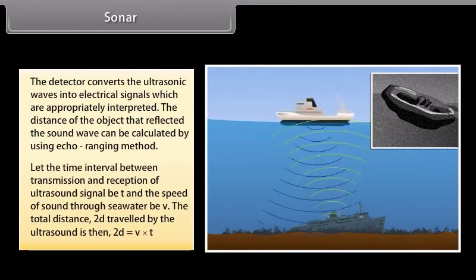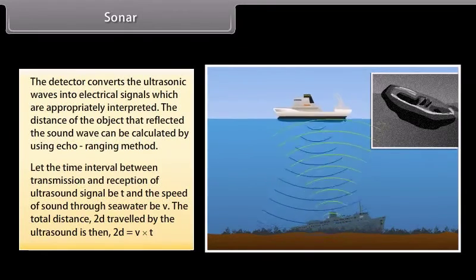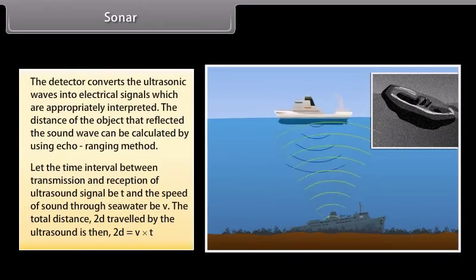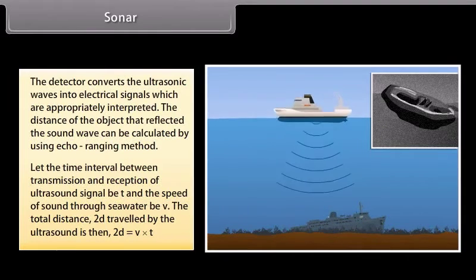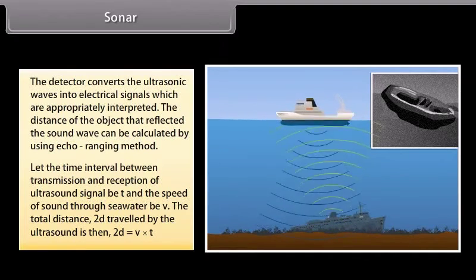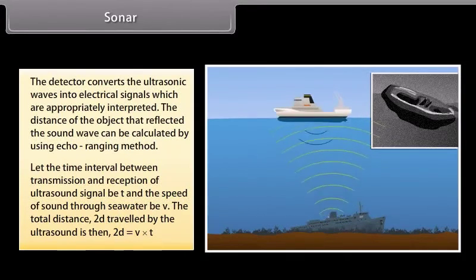The distance of the object that reflected the sound wave can be calculated by using echo ranging method. Let the time interval between transmission and reception of ultrasound signal be T and the speed of sound through seawater be V. The total distance 2D travelled by the ultrasound is then 2D is equal to V into T. This is the echo ranging method.